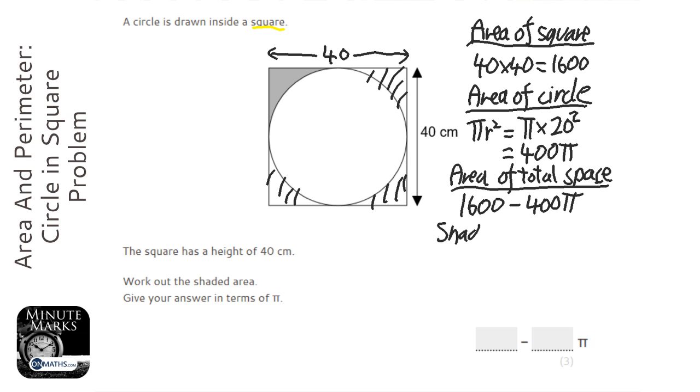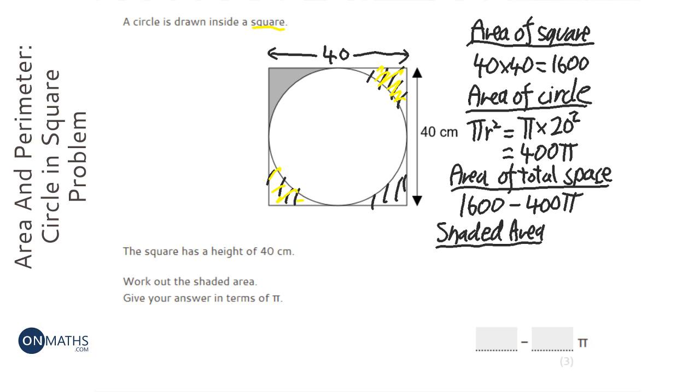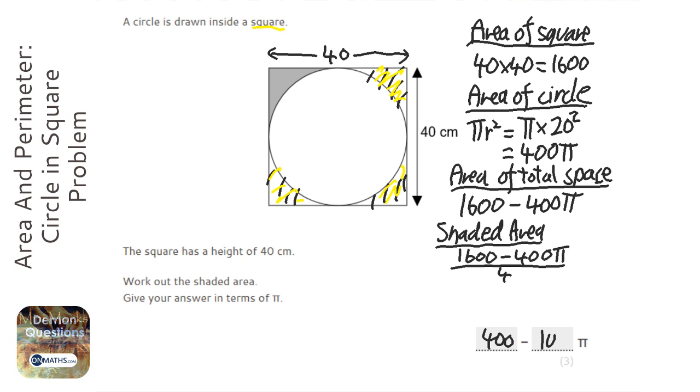OK, so now we need the shaded area. And to do this we simply divide the area of the total space by 4 because the yellow bits here we don't want and each of these four corners are the same area we just divided by 4. So it's going to be this, which we worked out before, all of that divided by 4. So 1,600 divided by 4 is 400, and 400π divided by 4 is just 100π.